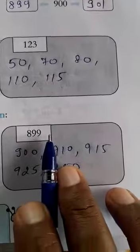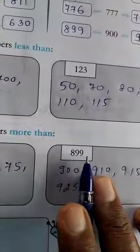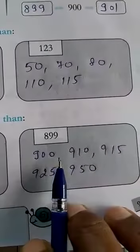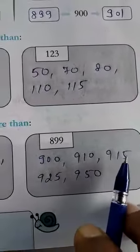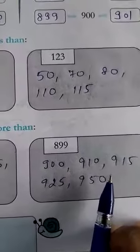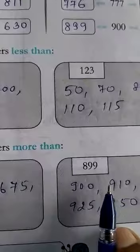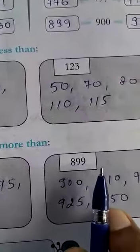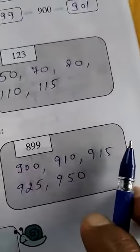Now, 899. So, more than 899 numbers are 900, 910, 915, 925, 950. So, any numbers which is more than 899, you can write any 5 numbers.